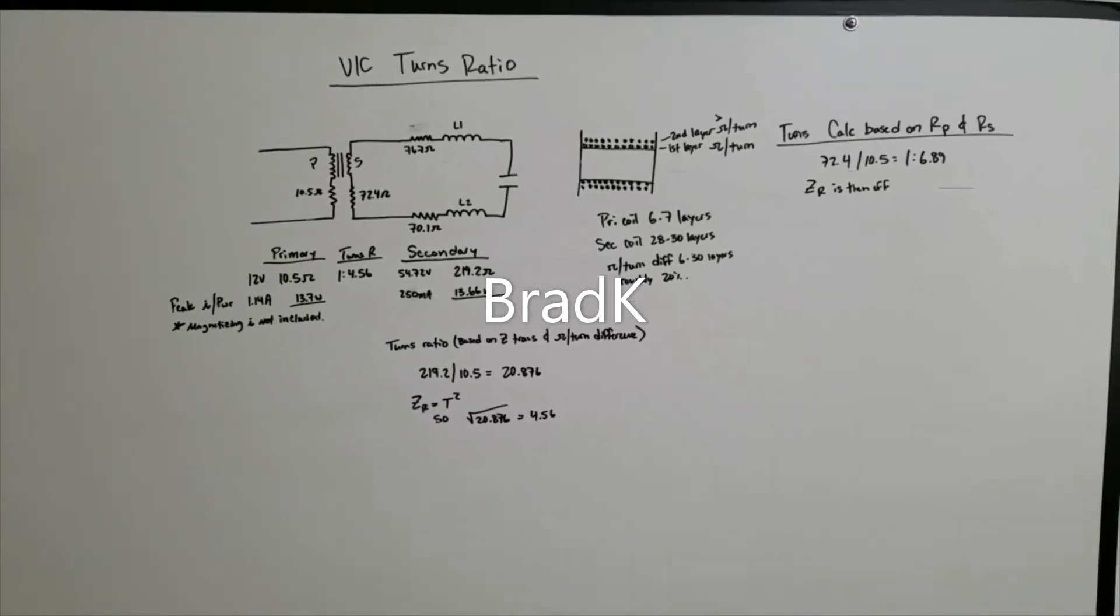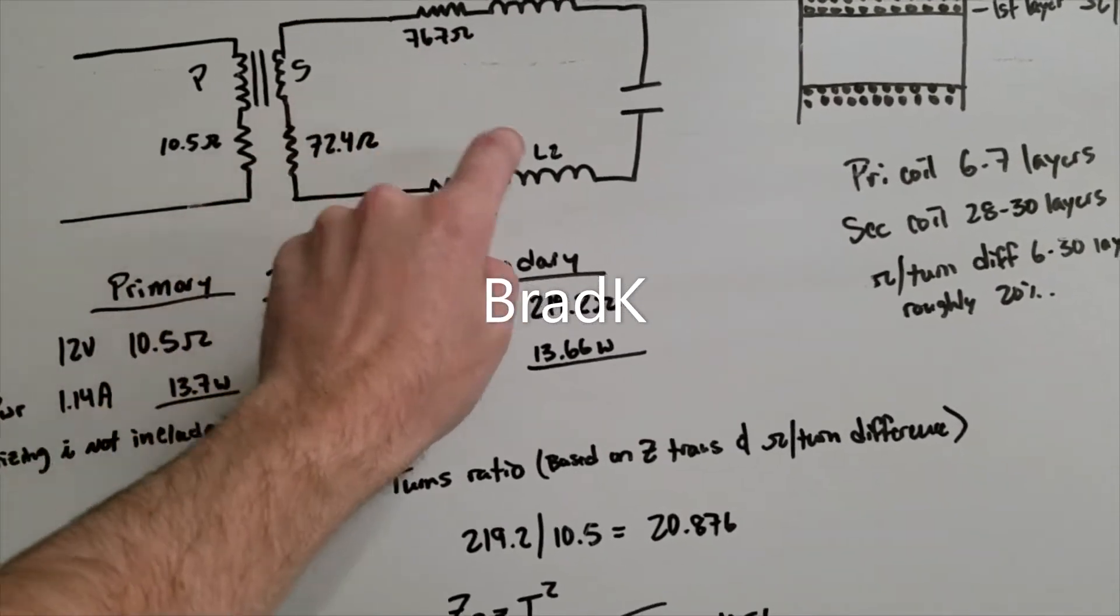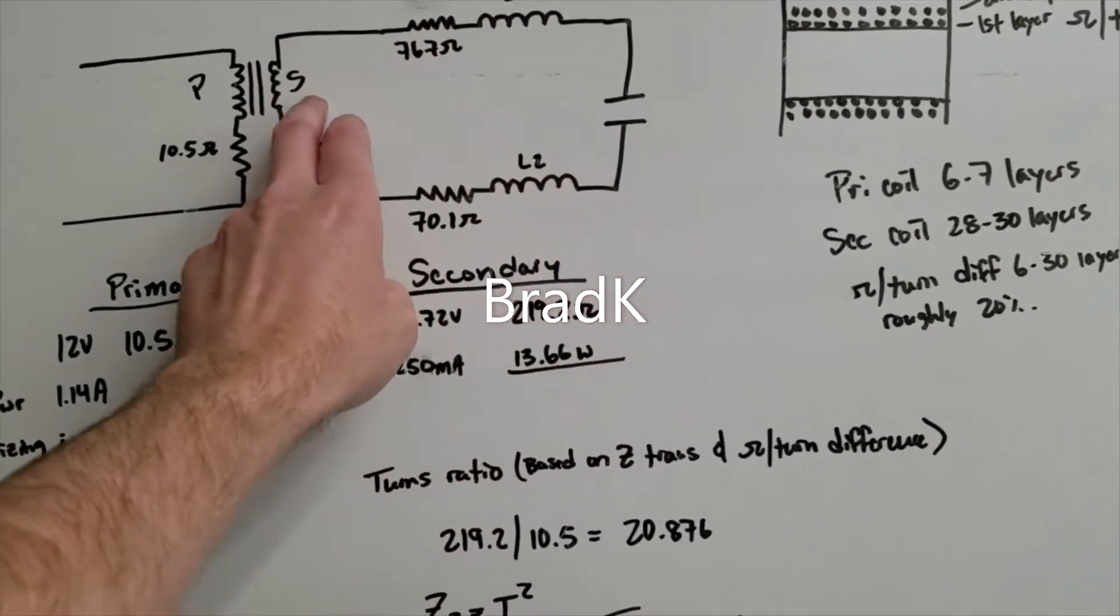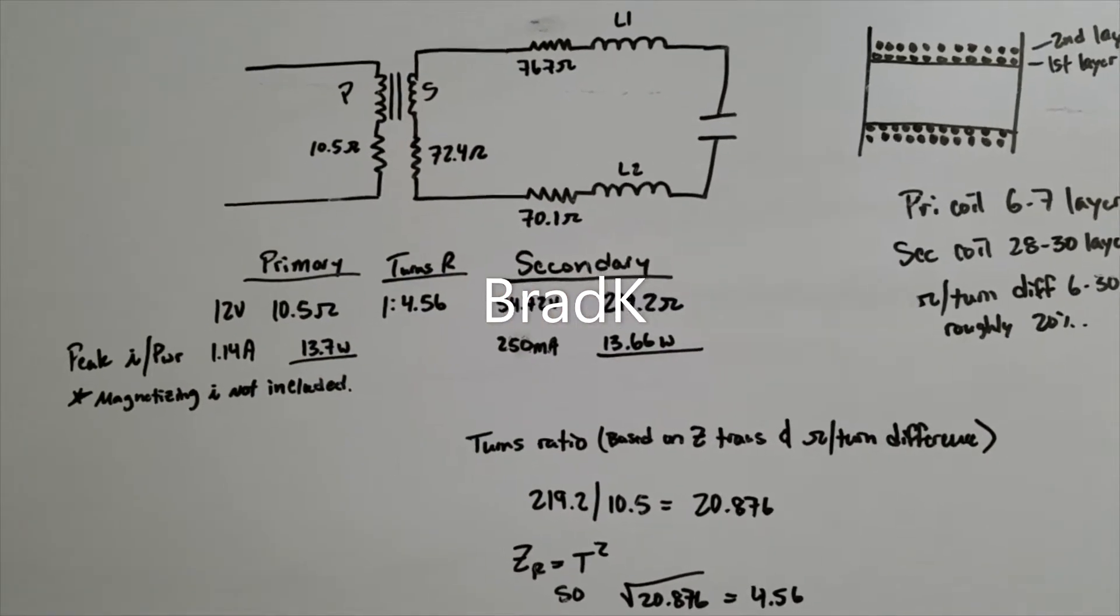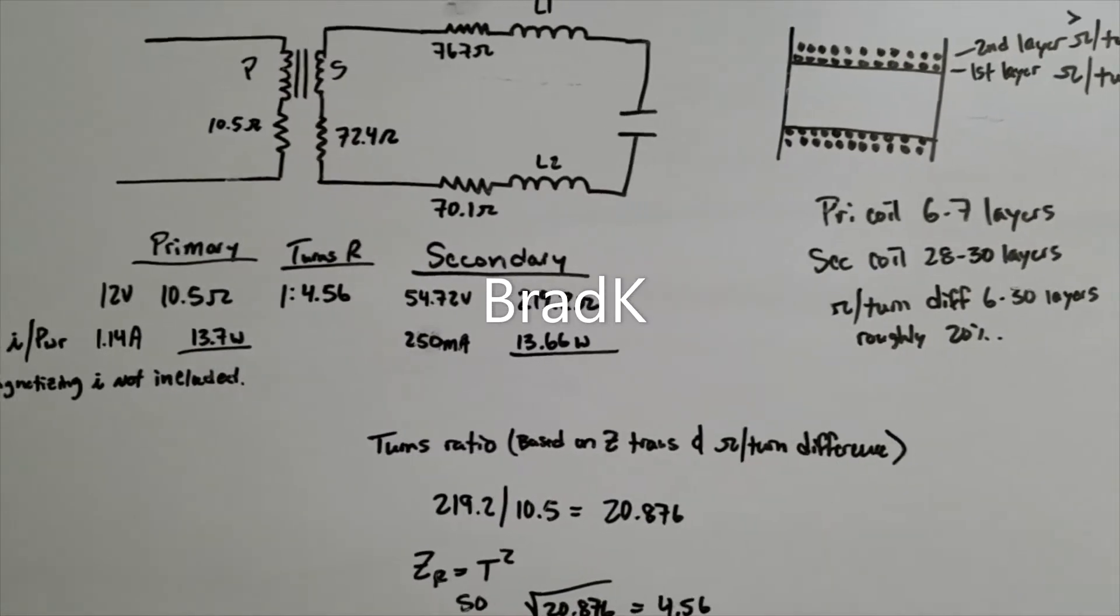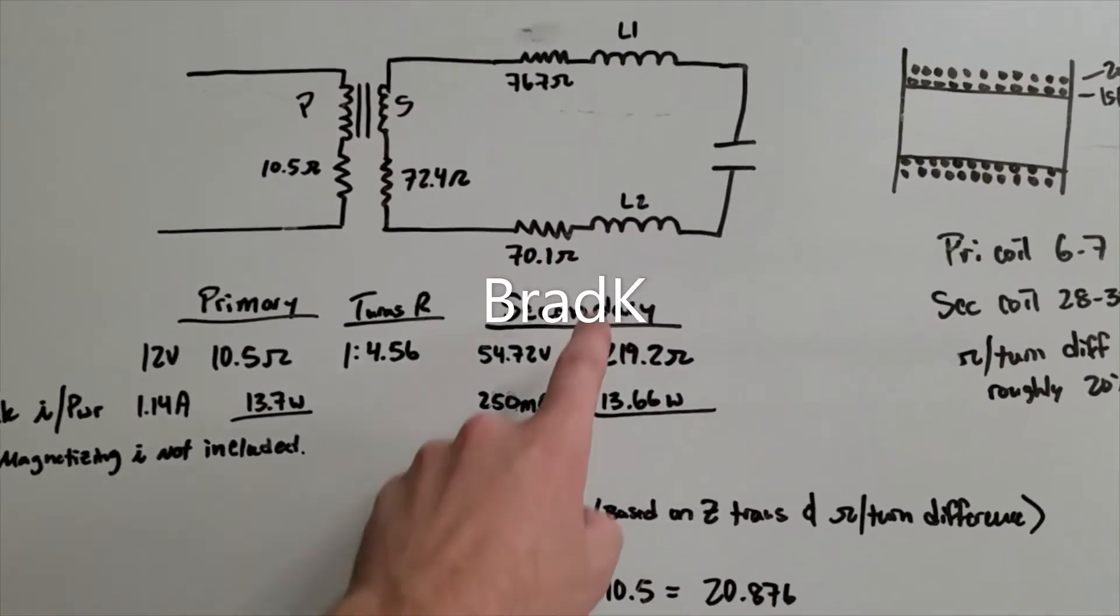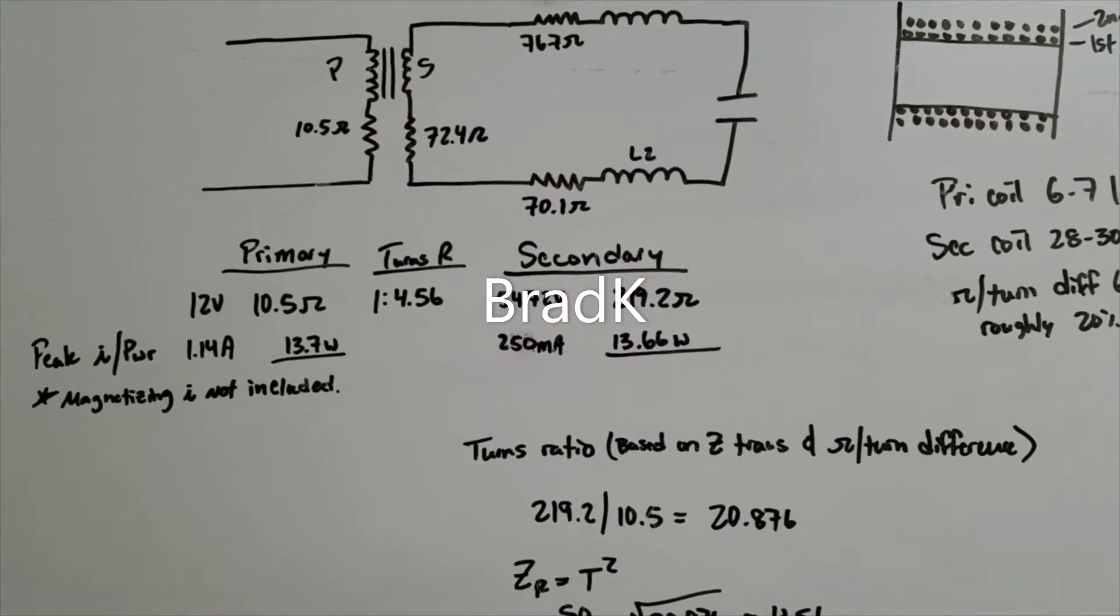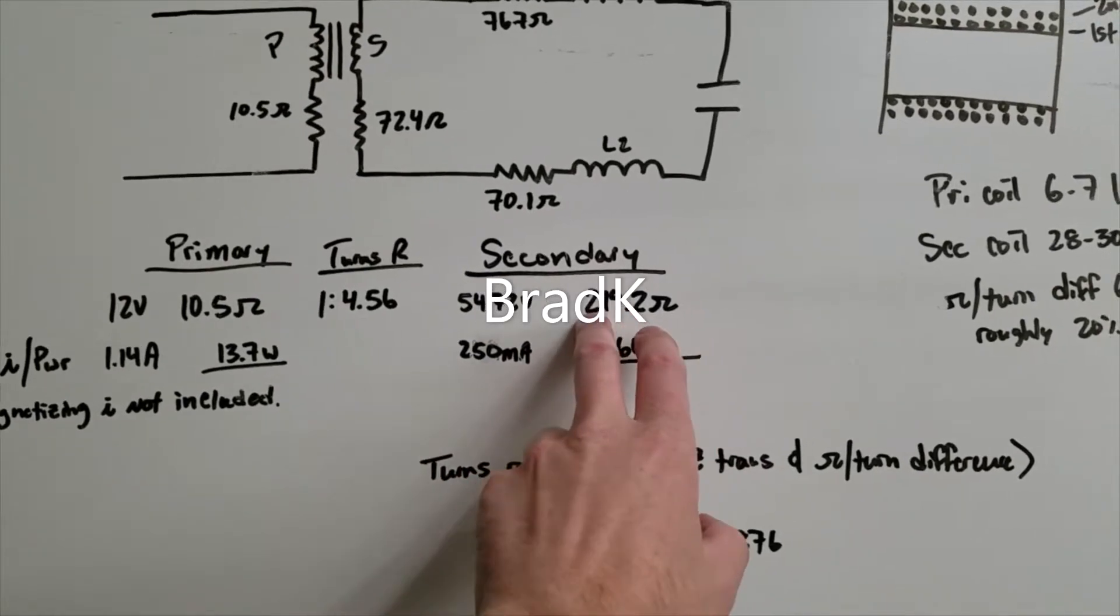So, how do we figure out the turns ratio? We've got three coils on the same core. And we don't know the turns on any of these, we can estimate them, but another way to do it is to look at the resistance values, which I think is a little bit easier.